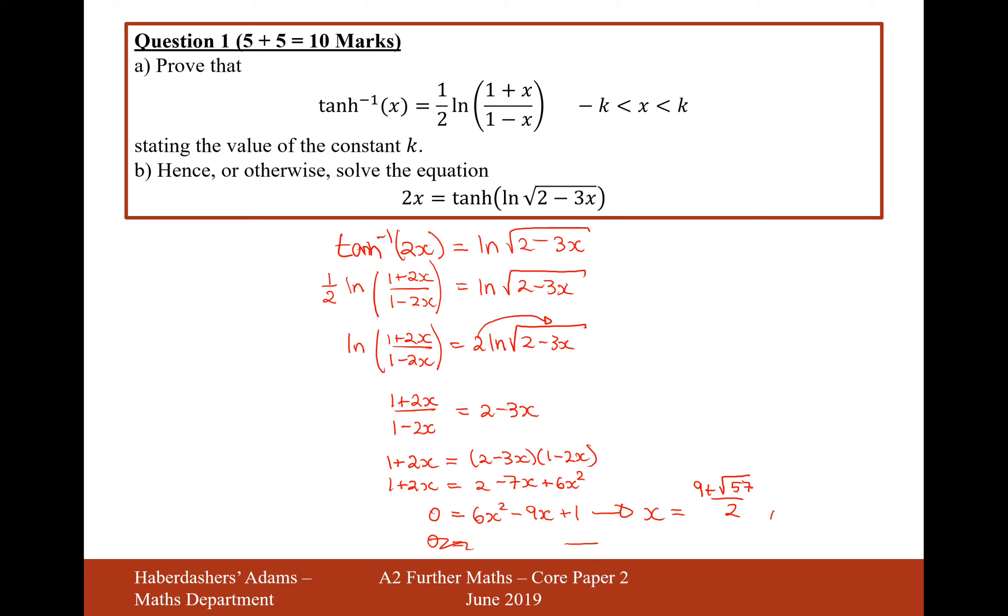But the next one might be allowed. The next one is 9 minus root 57 over 12. So I would say that this one here is not a solution because x must be defined between minus 1 to 1. So it's just this solution here.